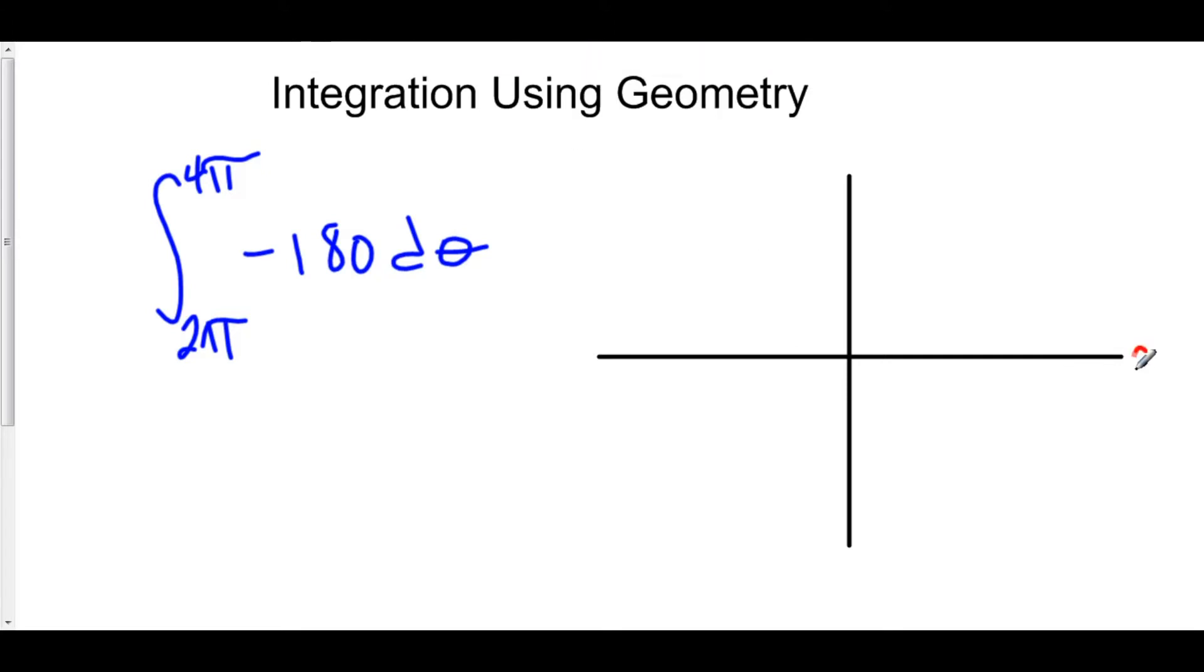Graphically, we are calling this the theta axis. However, our vertical axis is still the y-axis. So if we were to graph y equals negative 180,